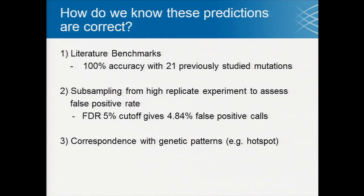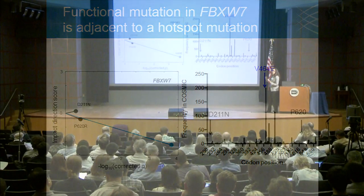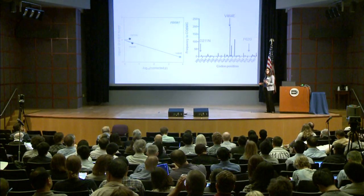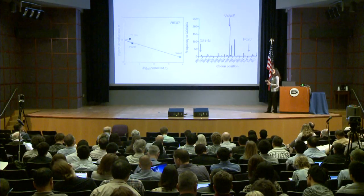We also looked at correspondence with genetic hotspot mutations. For FBXW7, a known tumor suppressor, two mutations were predicted to have no impact, whereas one was predicted to be loss of function. When you look at these mutations in COSMIC, the one with a predicted functional impact falls right in the hotspot, so you would expect it to be more functional than the others.